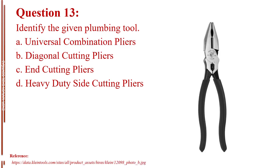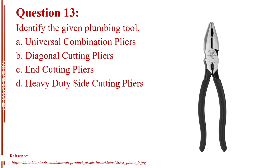Question number thirteen. Identify the given plumbing tool. Letter A, universal combination pliers. Letter B, diagonal cutting pliers. Letter C, end cutting pliers. Letter D, heavy-duty side cutting pliers. The answer is Letter A, universal combination pliers.